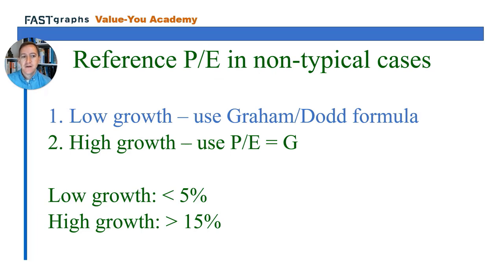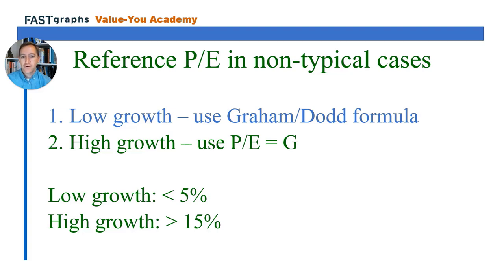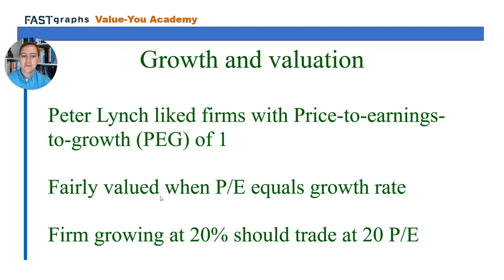In the case of the price-to-earnings ratio, we have low growth situations in which the firm has less than 5% annualized earnings growth, and we have high growth, which is greater than 15%. FastGraphs is set up to use alternate reference PEs. The default normal PE is 15. For low growth, we use the Graham-Dodd formula. For high growth — a firm with earnings growth rate greater than 15% — the price-to-earnings ratio is set equal to the growth rate.